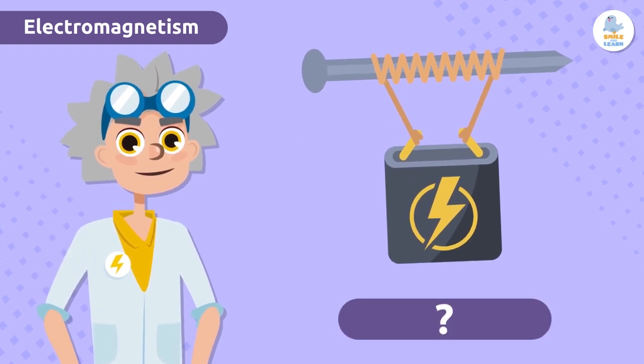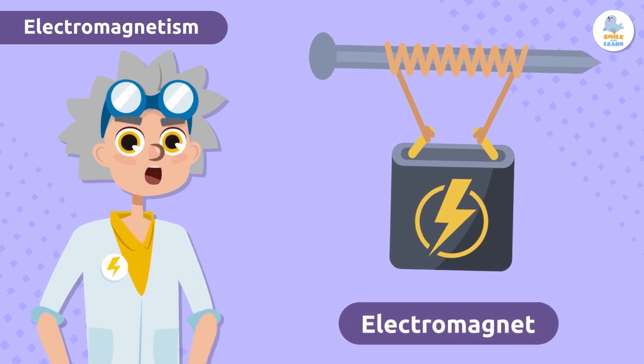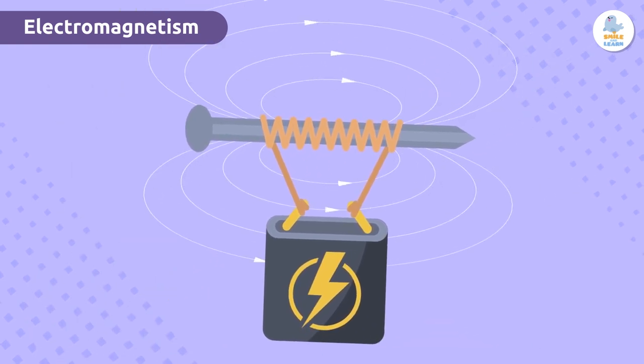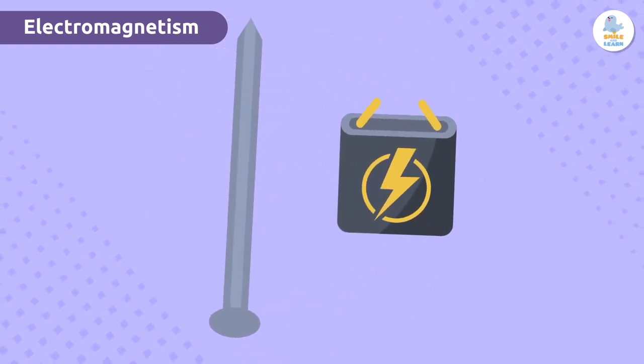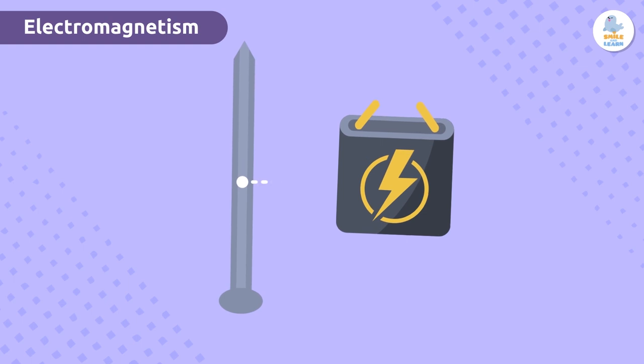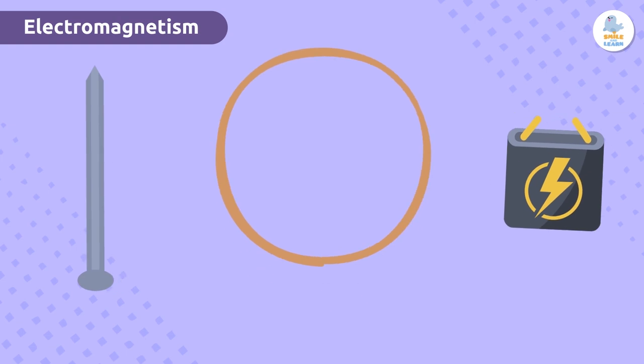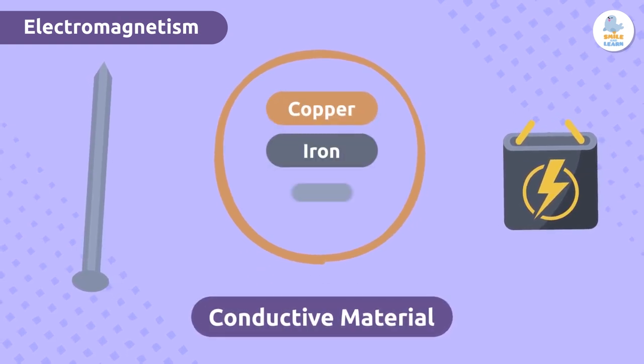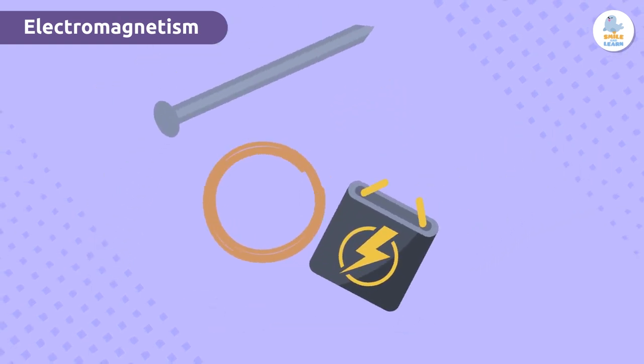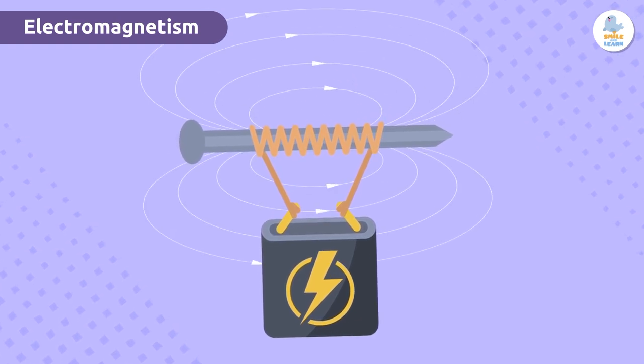Let's see if you can guess what this is. It's an electromagnet! We can generate a magnetic field very easily thanks to electromagnets. This involves turning a metal bar into a magnet by connecting it to an electric current, in this case a battery. To do this, we wind a wire of conductive material such as copper, iron, or aluminum around the metal bar.